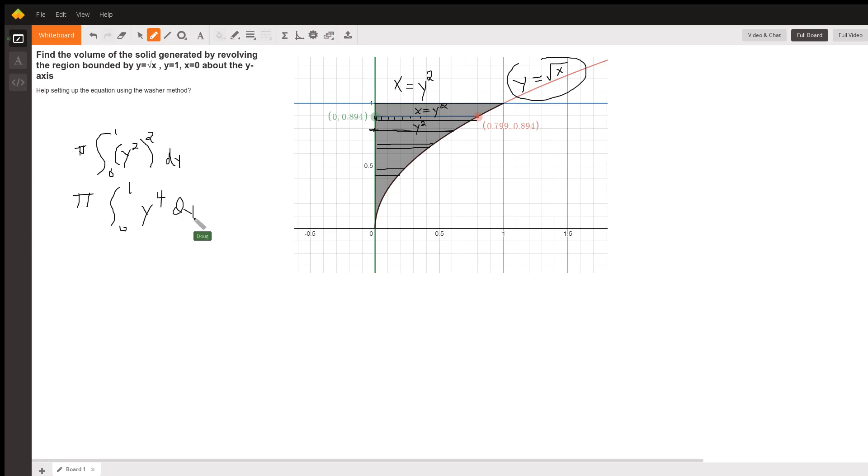So, the antiderivative is 1 5th y to the 5th. Evaluate that from 0 to 1, multiply by pi, and you've got your answer.